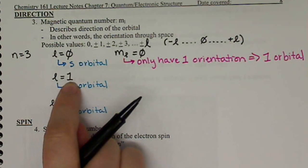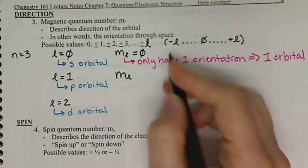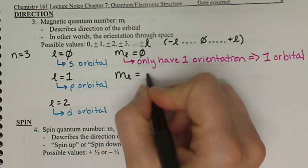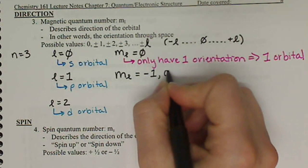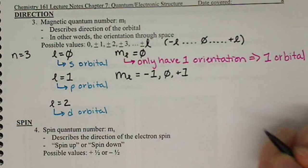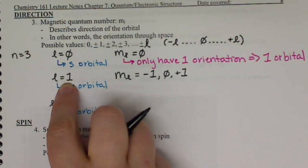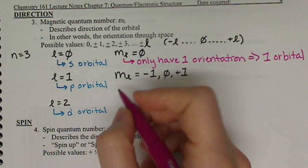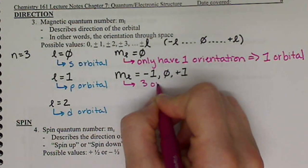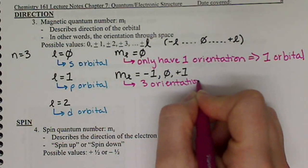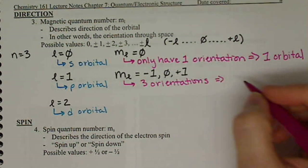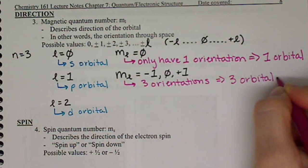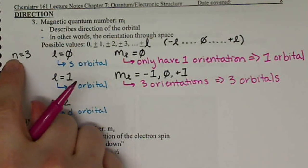When l equals one, m sub l can equal negative l, up to and including zero, up to positive l. So m sub l can equal negative one, zero, and positive one. For our p orbitals, we have the possibility of one, two, three different orientations.